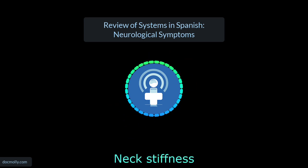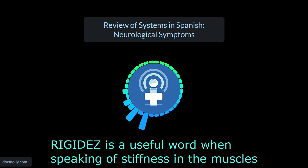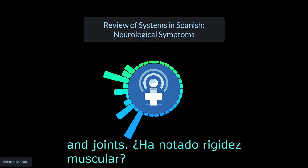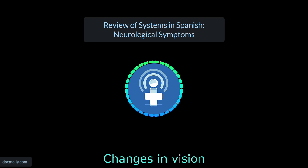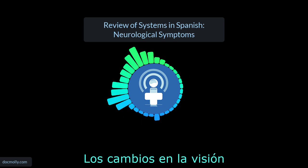Next, stiffness — La rigidez en el cuello. Rigidez is a useful word when speaking of stiffness in the muscles and joints. ¿Ha notado rigidez muscular? Changes in vision — Los cambios en la vista, o Los cambios en la visión.